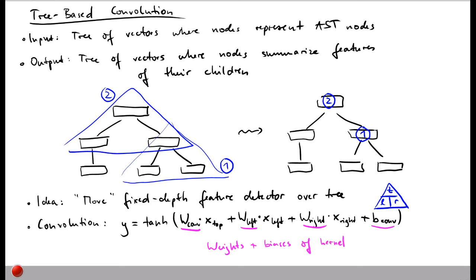As always with convolution, these same weights and biases are used for all positions where the feature detector is moved. So for every triangular subtree in the tree, the same weights are used to learn how to summarize three nodes into a single node.